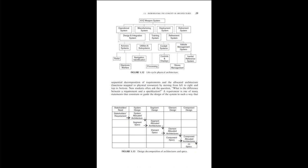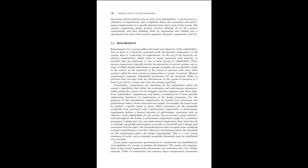A specification is a collection of requirements that completely define the constraints and performance requirements for a specific physical entity that is part of the system. The system's engineering design process involves defining all of the system's requirements and then bundling them by segmenting and refining into a specification for each of the system's segments, elements, components, and configuration items. Section 1.6: Requirements. Requirements for a system address the needs and objectives of the stakeholders. Just as there is a hierarchy associated with the physical components of the system, there is a hierarchy of requirements.